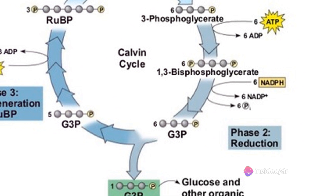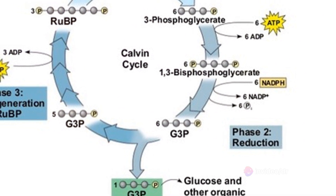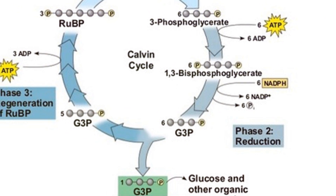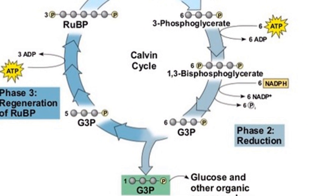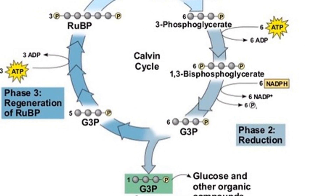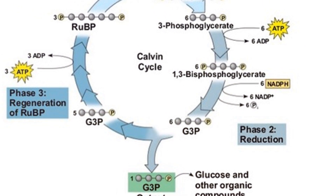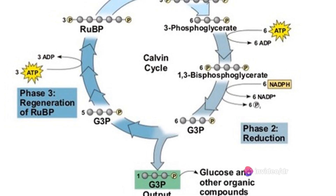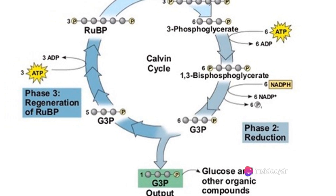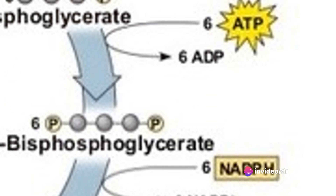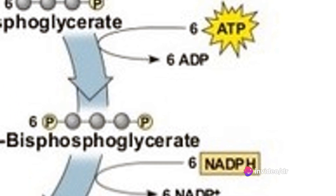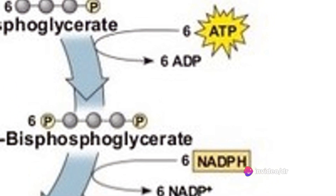During the second stage, reduction, these 3-carbon compounds are converted into glyceraldehyde-3-phosphate, or G3P, a simple sugar. 6 ATP and 6 NADPH are used to provide energy to these steps, so this step is called the reduction step.